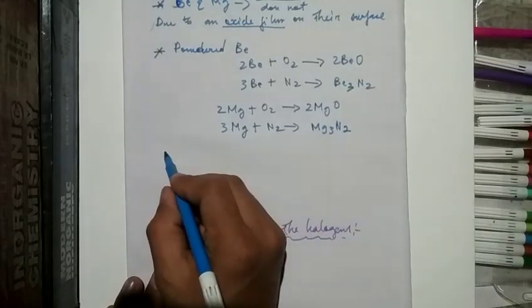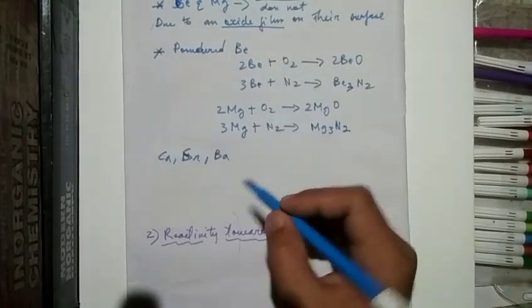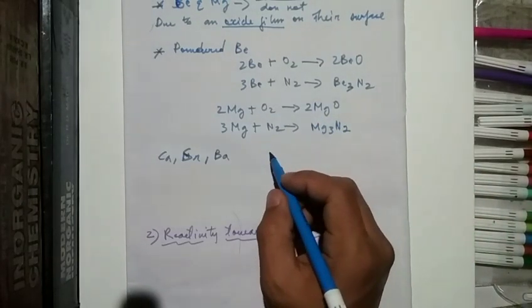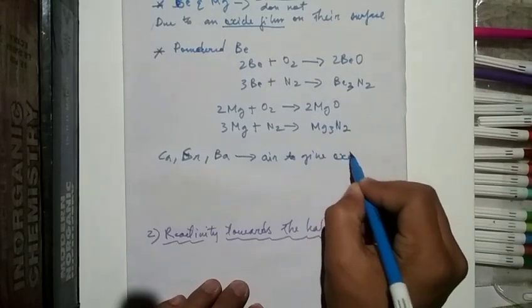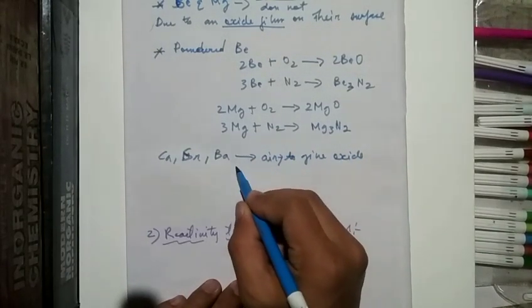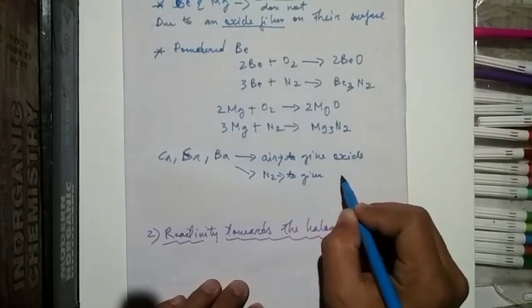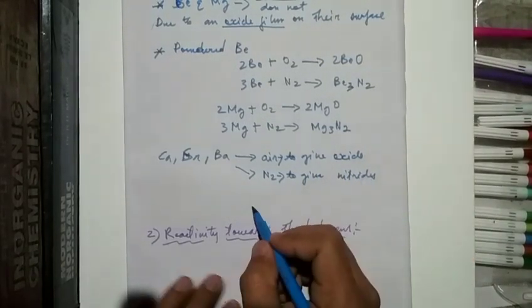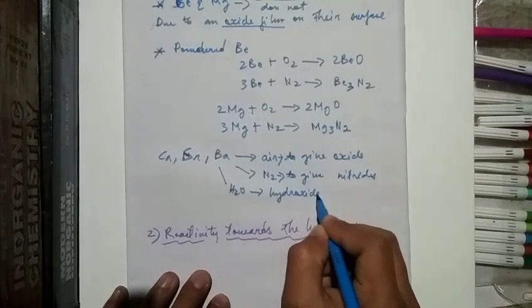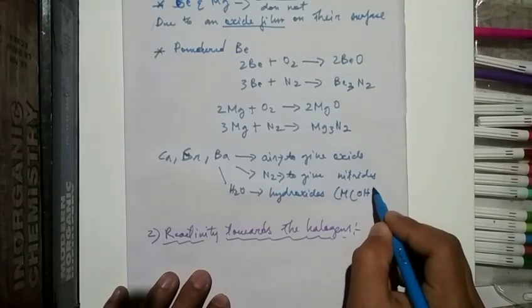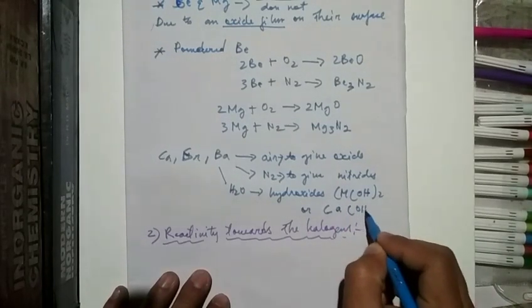The rest of the alkaline earth metals — calcium, strontium, barium — react with air to give oxides, with N₂ to give nitrides, and with H₂O to give hydroxides. Examples include Mg(OH)₂ and Ca(OH)₂.